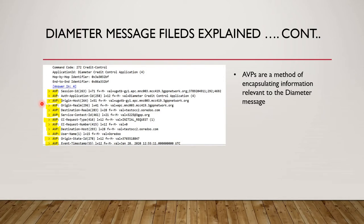So here we have AVPs: session ID, authentication app, auth application ID, origin host, origin realm, destination realm, service context ID. I'll show you in a Wireshark dump how all these fields look. Every field has some information inside it. Session ID must have a big unique ID.